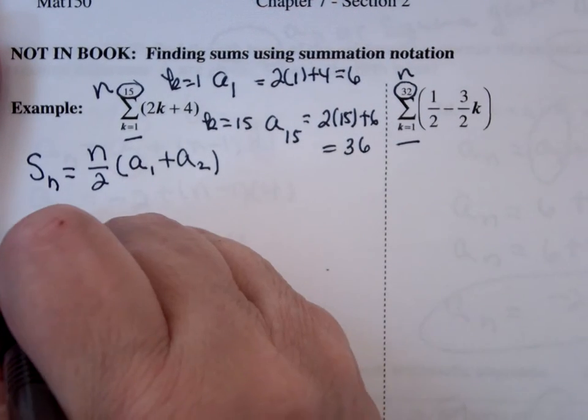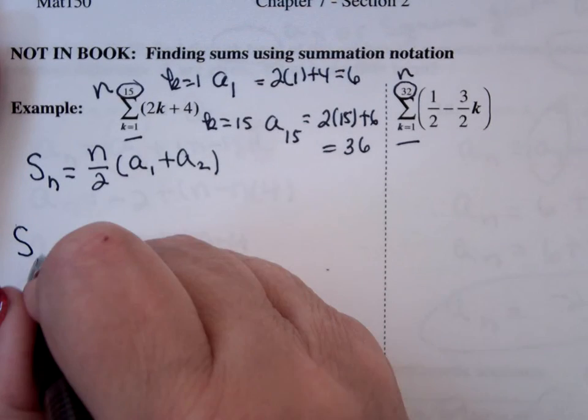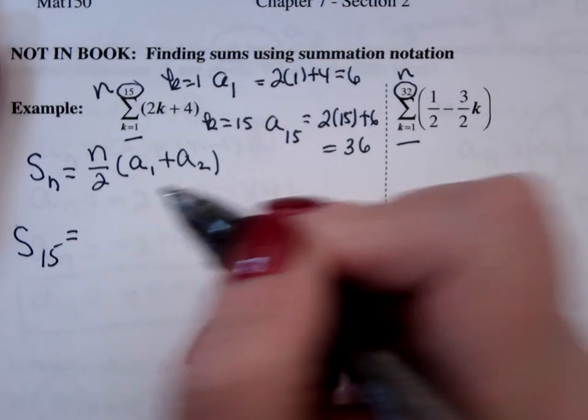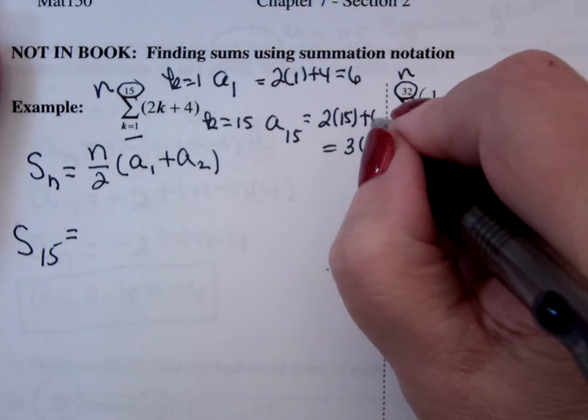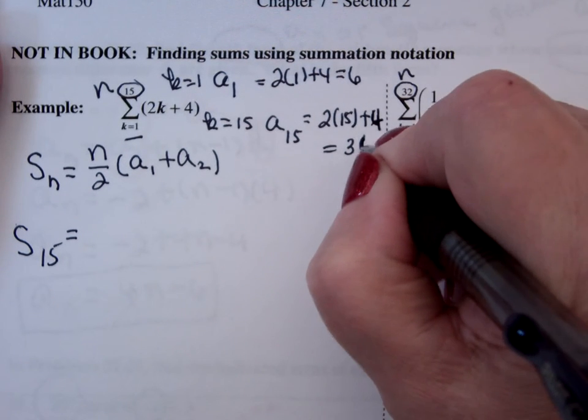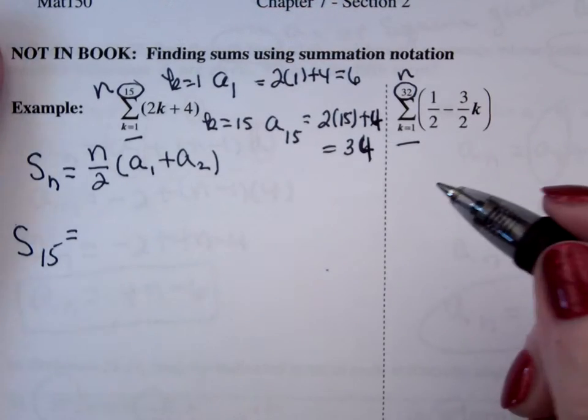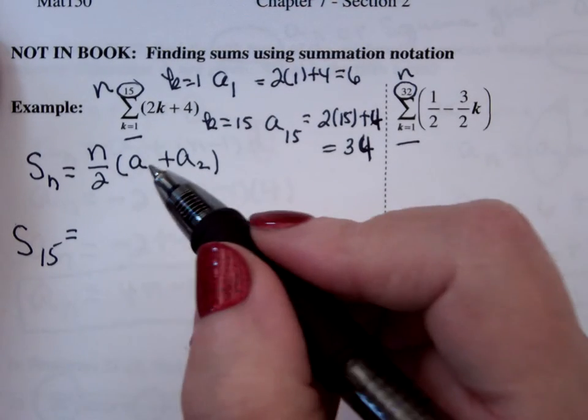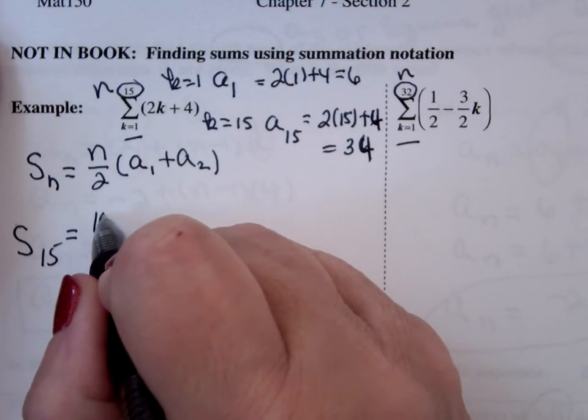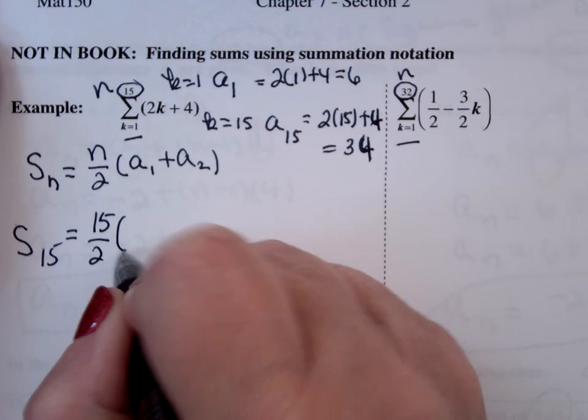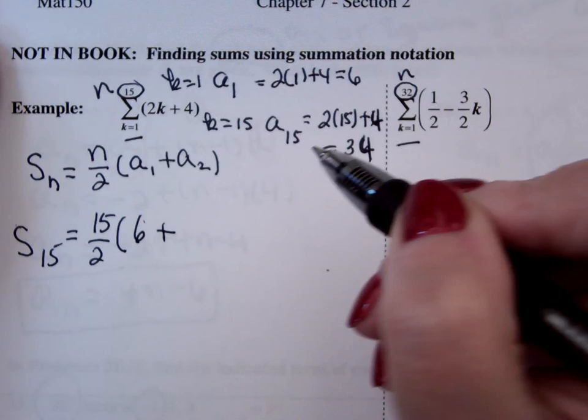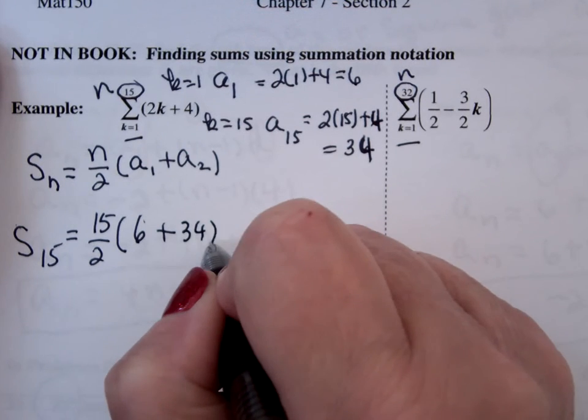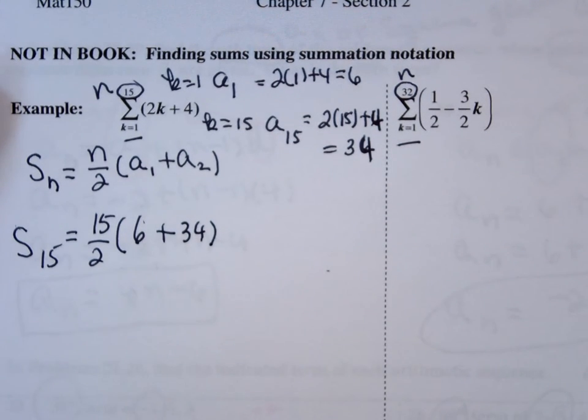So now you just fill it in. And so n is 15. Oh, plus 4. Where did I get? Oh, I know. I looked above and saw the 6. Thank you. Number of terms, which is 15, divided by 2. First term is 6, last term is 34, and then it's just arithmetic.